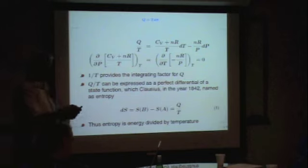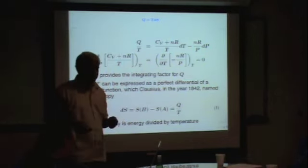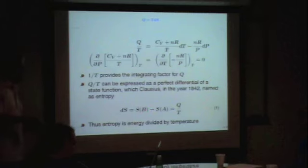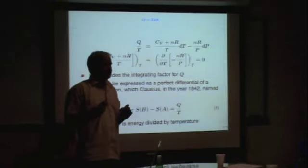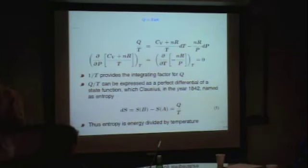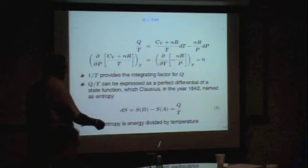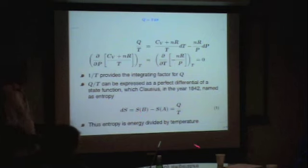When the system goes from thermodynamic state A to thermodynamic state B, the change in entropy is entropy at B minus entropy at A. I don't need to bother about what path it takes. In fact, the path can even be a non-quasi-static process or an irreversible process. All I need to find the change in entropy is the entropy, which is a function of the thermodynamic state variables. If I know entropy at B and entropy at A, the difference gives the change in entropy.